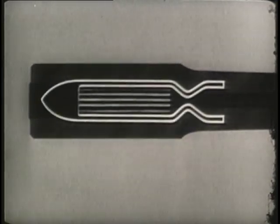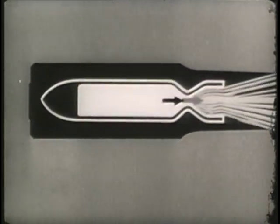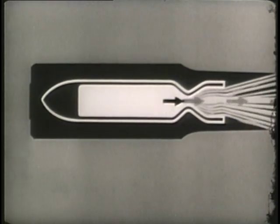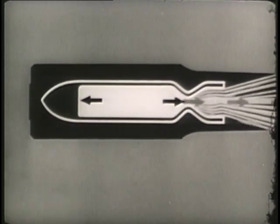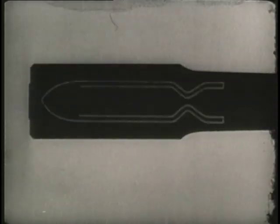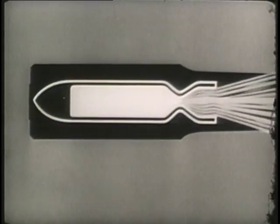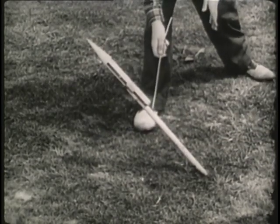By making a few changes in our simplified gun, we can see what happens when we launch a rocket. In effect, the lightweight rocket replaces the gun and the lightweight gas replaces the projectile. The pressure inside, being equal in all directions, forces the gas out of the chamber at an extremely high velocity. At the same time, the pressure exerts an equal force to the left to propel the rocket.